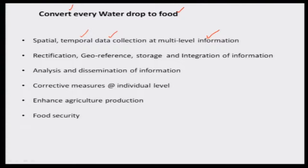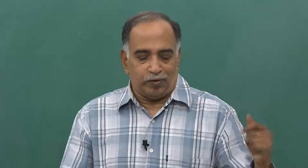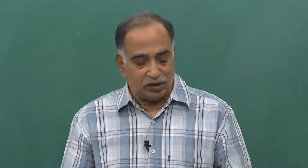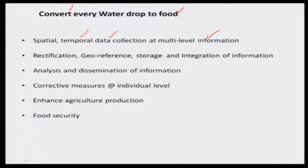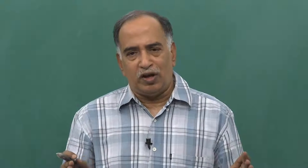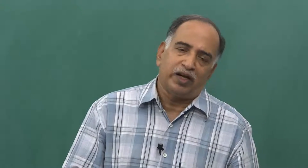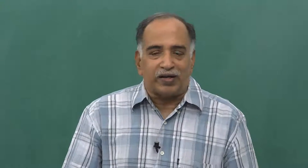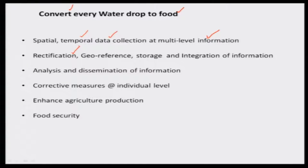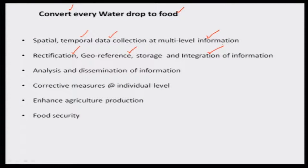What we do with this type of multi-level information is: observations are carried out by different people with different information and may not be uniform — they may not be on the same scale. Depending upon the convenience and the problems, there are different scale factors. Those scale factors need to be rectified. There should be a common scale for merging all datasets by geo-referencing, and it should be stored in a computer system for input, storage, modifications, withdrawal, or output for different decision-making.